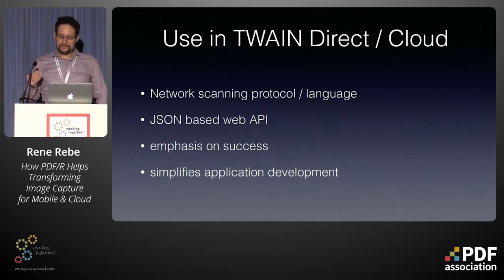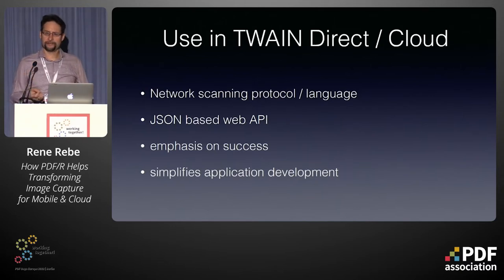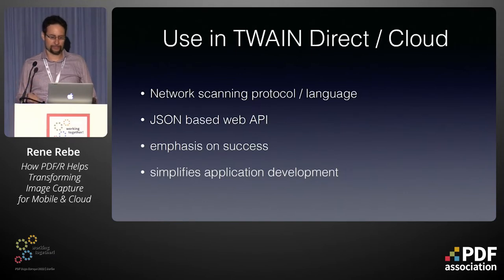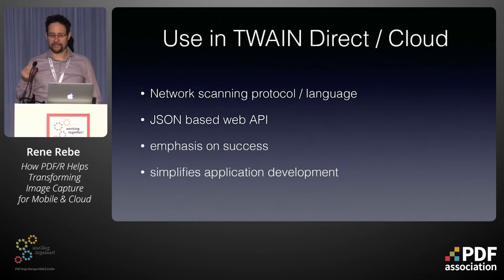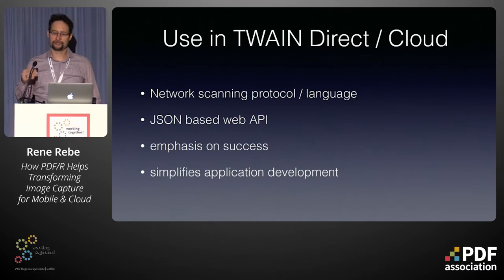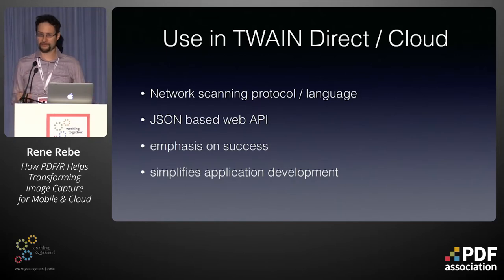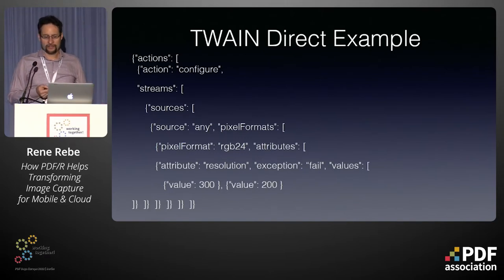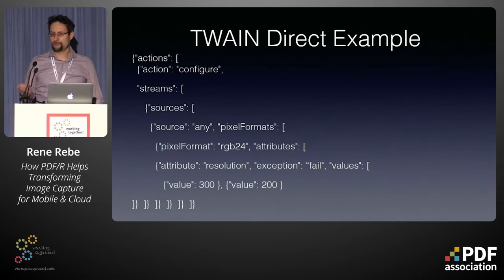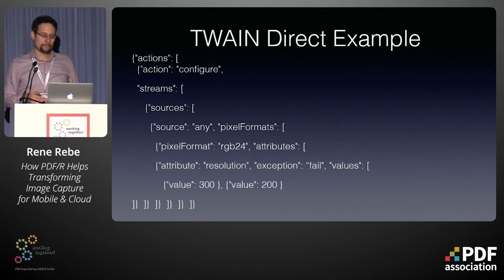Twain Direct similarly simplifies scanner interfacing. Previously, you had to deal with pointer-based C APIs, setting properties, negotiating capabilities — error-prone and complex. The whole Twain Direct and Cloud modern networked API simplifies this dramatically with JSON-based web-like APIs. With classic TWAIN, you would need to negotiate capabilities: does the scanner have a flatbed, an automated document feeder, does it support color, grayscale, duplex, barcodes, de-skewing? All of this is no longer necessary. You simply send JSON job configurations. Theoretically, you don't even need to do that — you can just say 'scan' and get the scan with the defaults, which is usually pretty good, though of course you can configure color, 300 DPI, and so on.